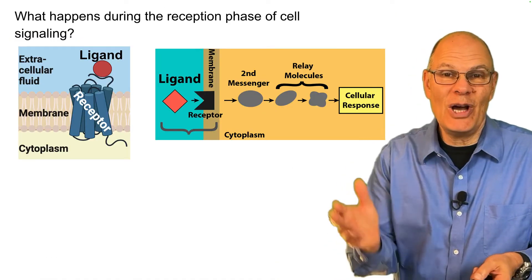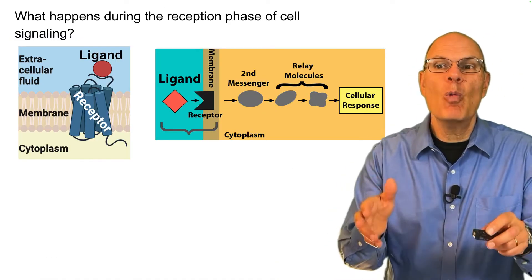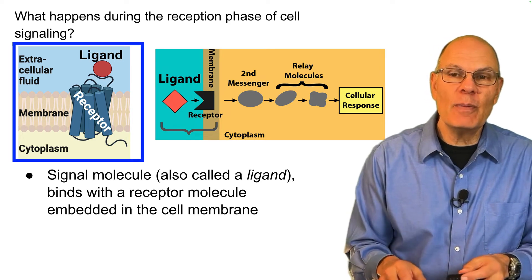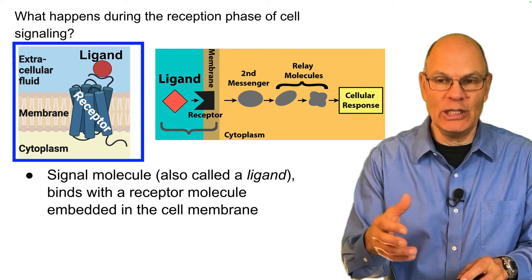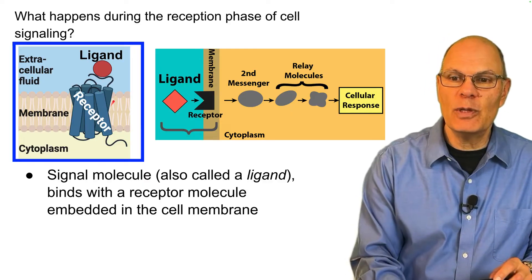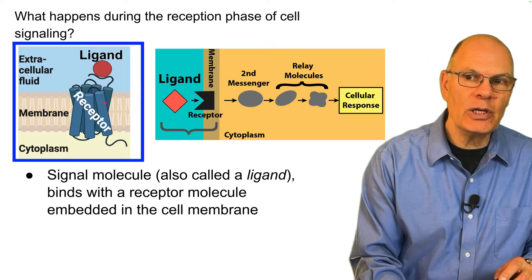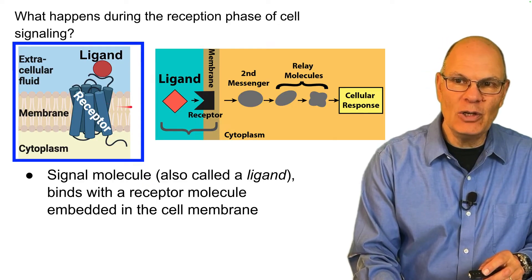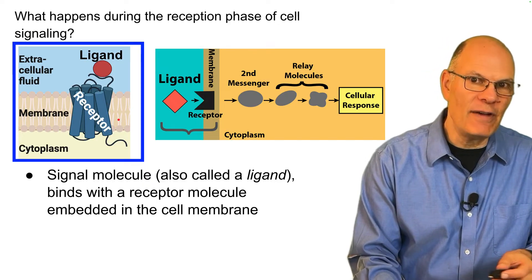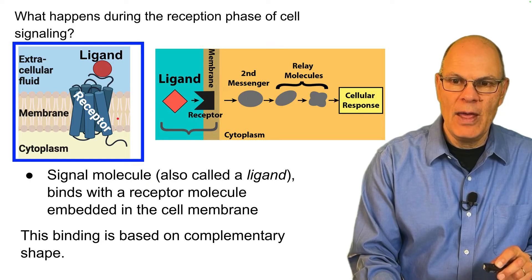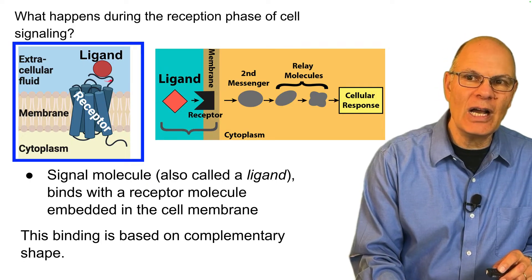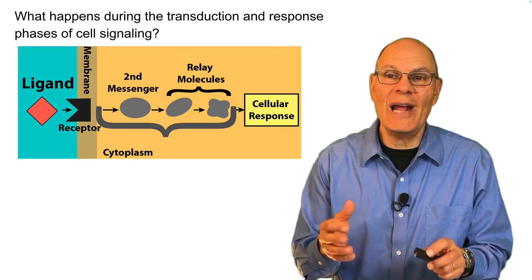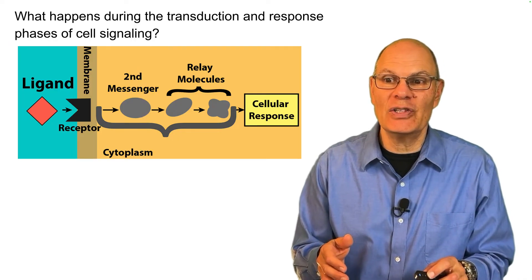What happens during the reception phase of cell signaling? The signal molecule, also called a ligand, binds with a receptor molecule. Here you can see a receptor with a more realistic depiction showing how it's embedded in the phospholipid bilayer of the cell membrane. That binding is based on complementary shape.